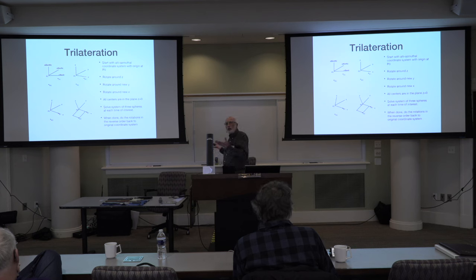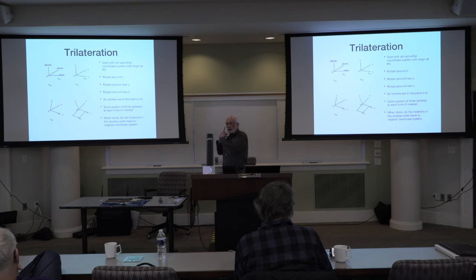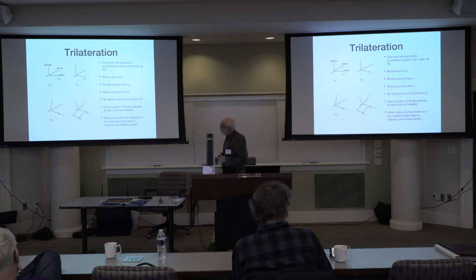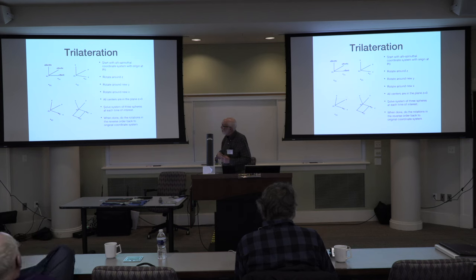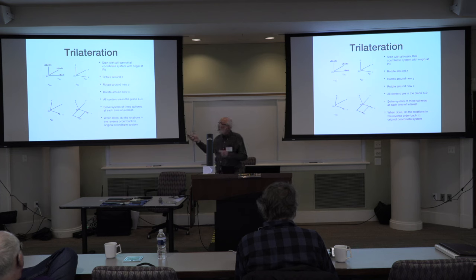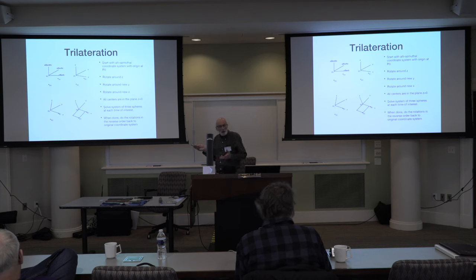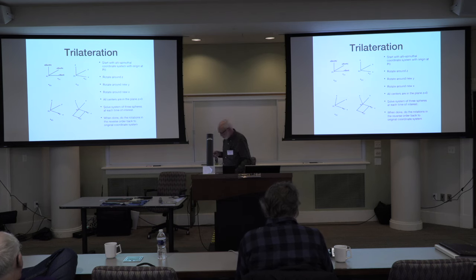Once you get there, you can use the trilateration with the slant ranges from PREDICT to calculate the satellite positions at a series of times during the pass. When that's done, you do the coordinate-system rotations backwards up to the original coordinate system. The first calculations I did once I got back there were to check my slant ranges to the new satellite positions, and they returned okay. So I'm assuming my calculations for the trilateration were good.